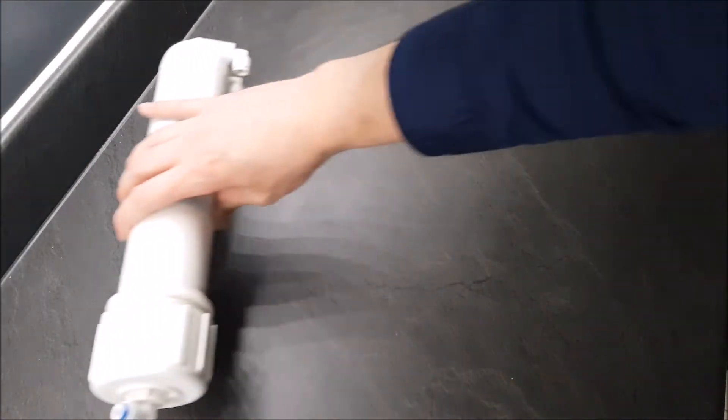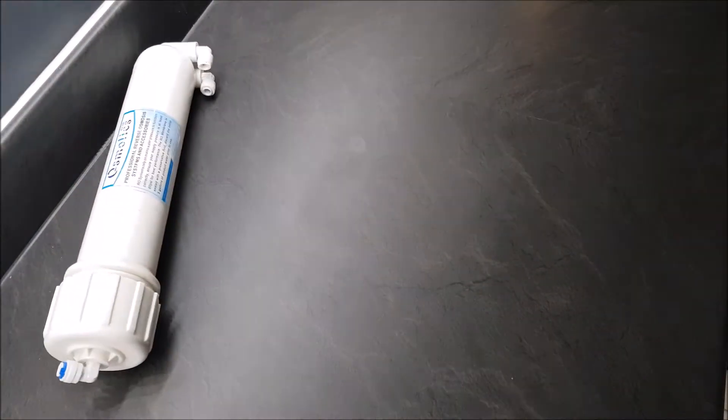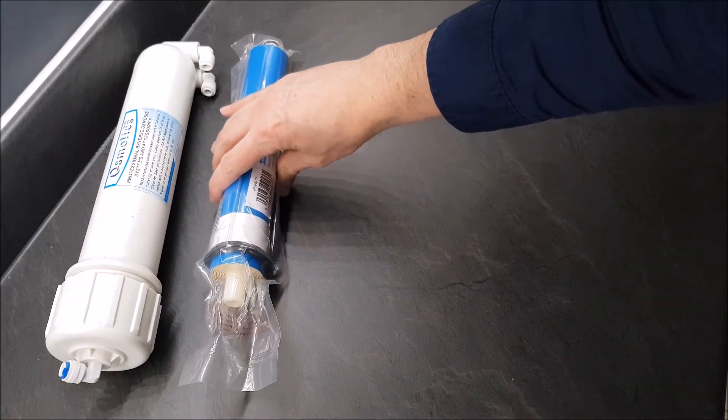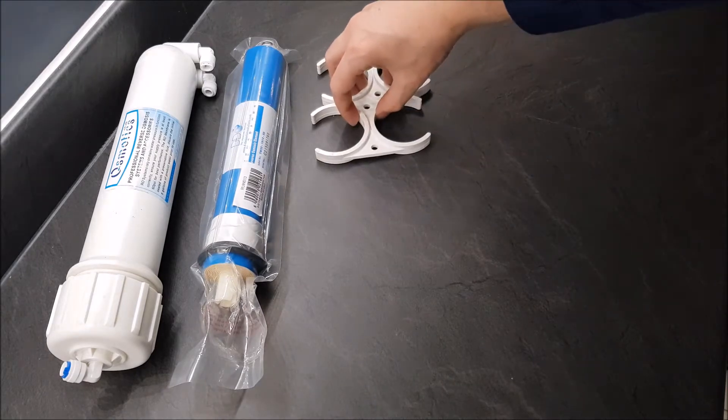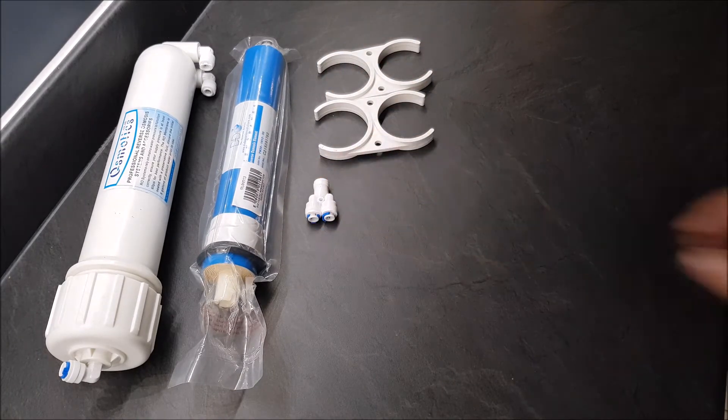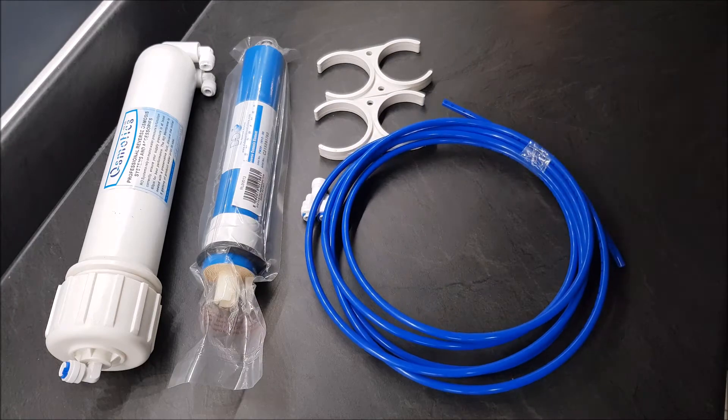And today is part one of turbocharging my RODI system. Now this is a really simple mod that makes a massive difference. With a cheap upgrade kit like this, your RO production will increase from a trickle to a flow. You can add whatever size membrane you want, the bigger the better.